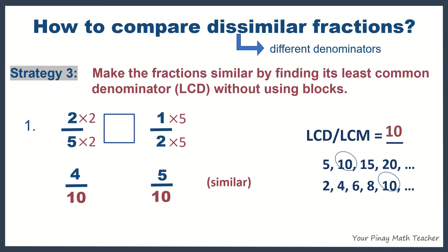So, we have 4 tenths and 5 tenths. They are now similar. Since 4 is less than 5, then 4 tenths is less than 5 tenths. And so, with 2 fifths, it's less than 1 half.